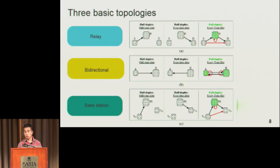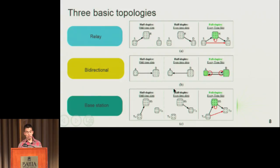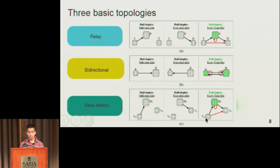Three basic topologies are described for the full duplex scheme. We are emulating the base station stage where we have two nodes working as half-duplex. The first one sends information to the base station in one time slot. Next, the base station sends information to the other half-duplex node. If we have a terminal working as full duplex, we can send information from the first node to the base station, and simultaneously the base station sends information to the other half-duplex node using the same bandwidth. That is what we are proposing.